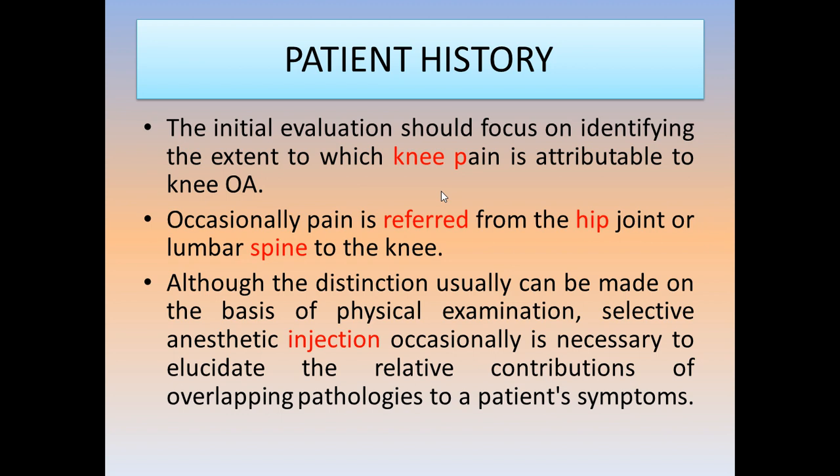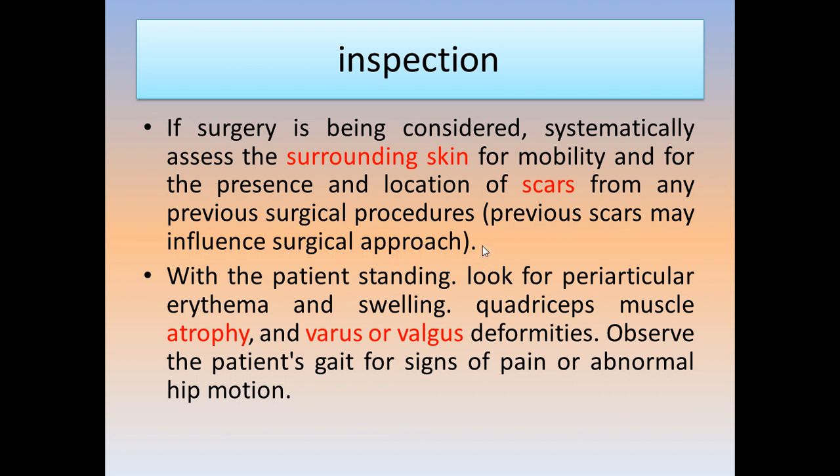If there is an overlap of pathology like spine or hip, you focus on treating the most dominant site of pain first. If the back is the dominant site of pain, you start with the back — for example, lumbar spinal stenosis. If the hip is the main site of pain, you start with it, and so on.